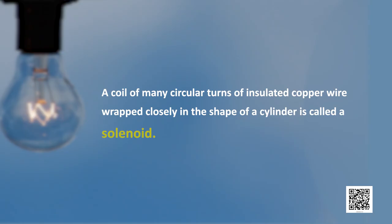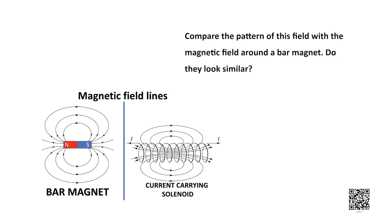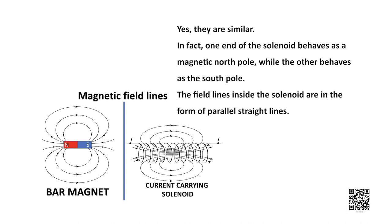A coil of many circular turns of insulated copper wire wrapped closely in the shape of a cylinder is called a solenoid. Let's look at the pattern of magnetic field lines around a current carrying solenoid. As you can see on your screen, if we compare this pattern of the field with the magnetic field around a bar magnet, do you see some similarity?